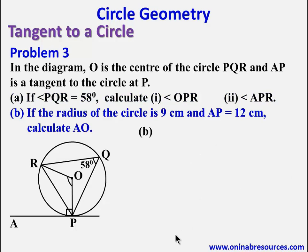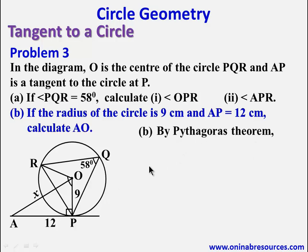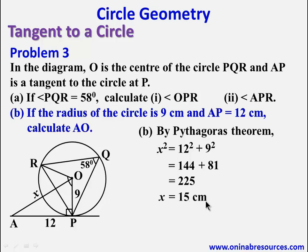For part 3B, if the radius of the circle is 9 centimeters and AP is 12 centimeters, calculate AO. We join AO and call it X. AP is 12 centimeters and radius OP is 9 centimeters. From the right-angled triangle APO, by Pythagoras' theorem, X squared equals 12 squared plus 9 squared, giving 144 plus 81, which is 225. Therefore X equals the square root of 225, which gives 15 centimeters. We are done with the solution to problem 3.